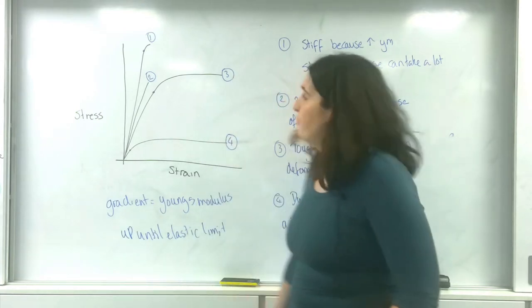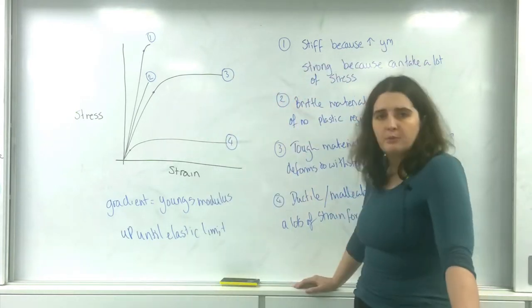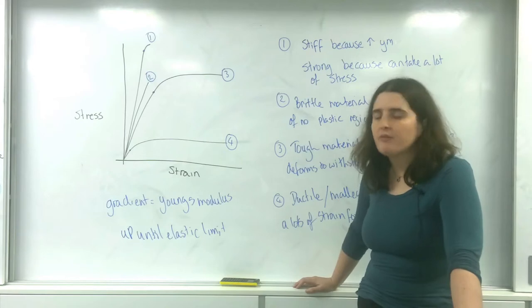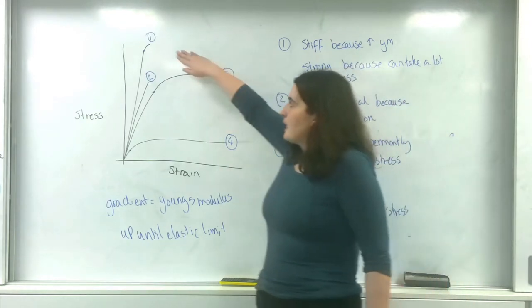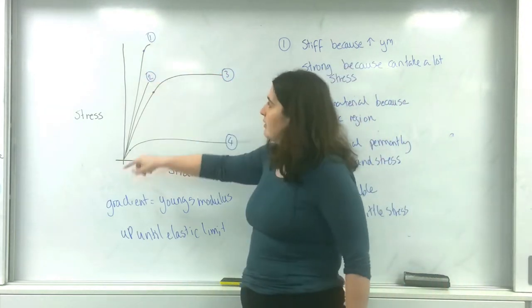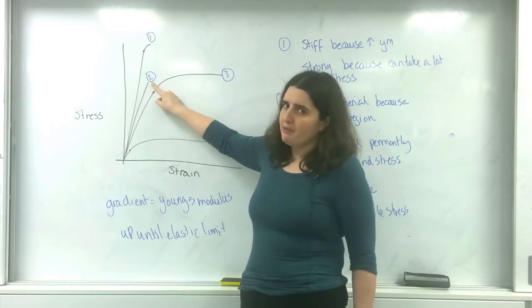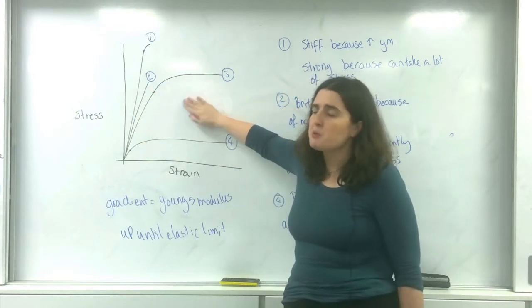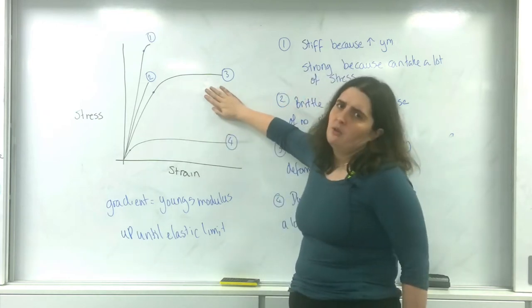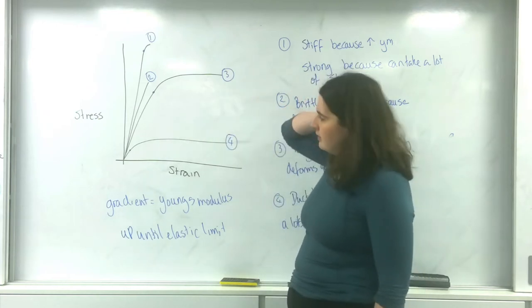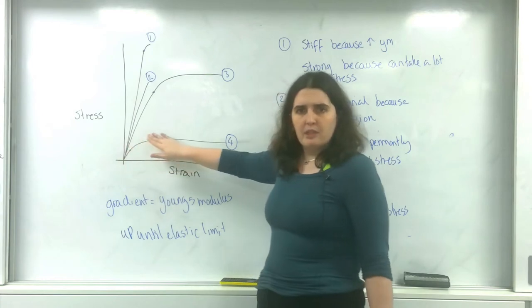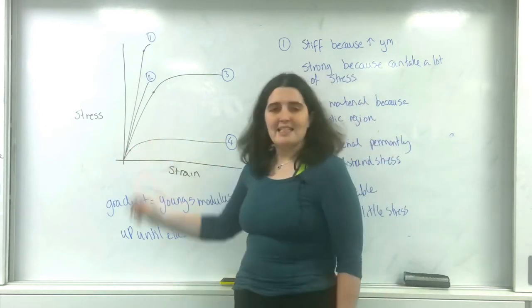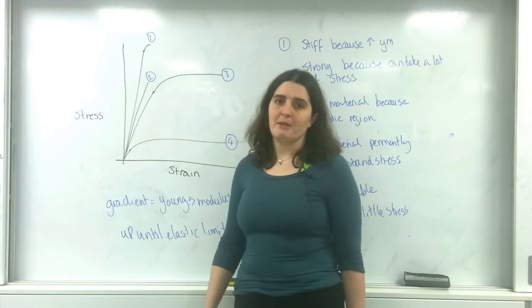And that is some of the four most important material properties that you can get from a Young's Modulus Graph. A strong material, also very stiff. Brittle material, because there's no plastic region. A tough material, because there's a large plastic region, because it's absorbing all the energy by changing its shape. And a ductile or malleable material, one that doesn't really have an elastic region at all. It's mainly all plastic deformation.